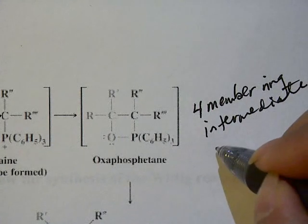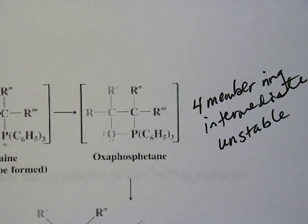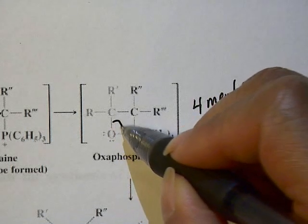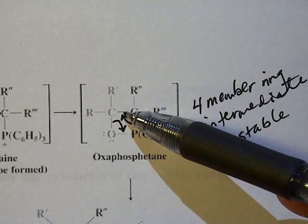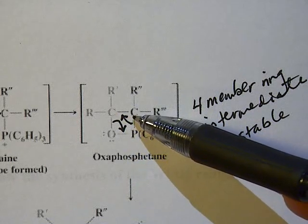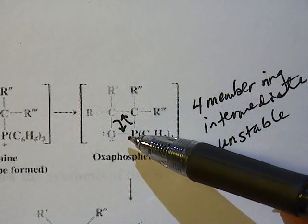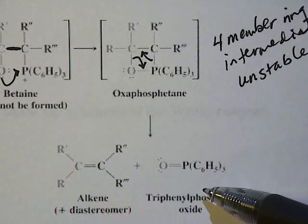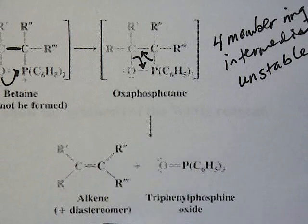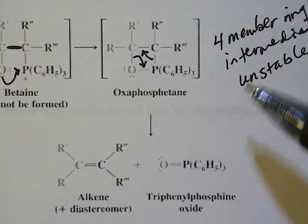The four-membered ring intermediate is not stable, so it decomposes immediately. The two electrons go to carbon-carbon to make the double bond, and another two electrons go between oxygen and phosphorus to make the triphenylphosphine oxide. The two products are the alkene — as a mixture of E and Z isomers — plus triphenylphosphine oxide as the byproduct.